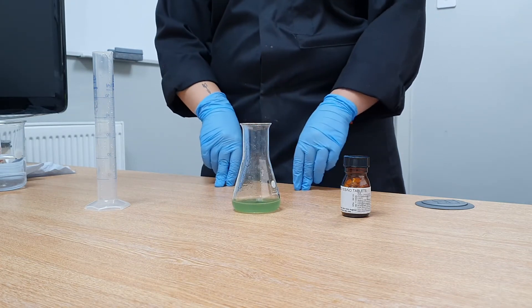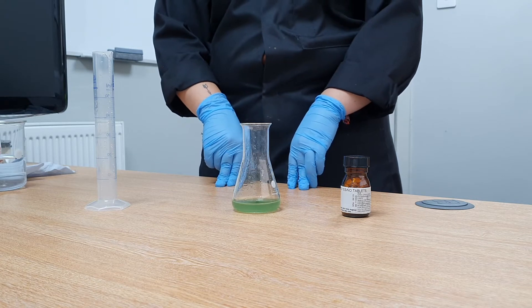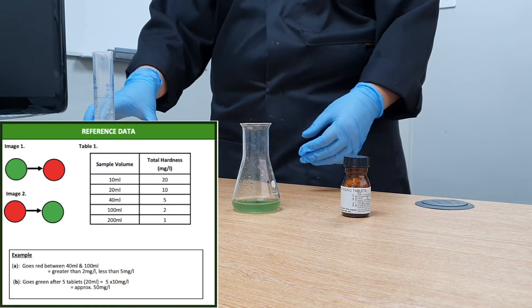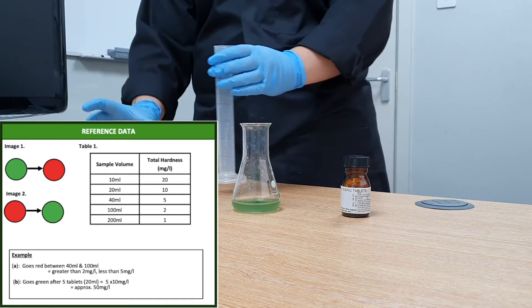If a green colour develops the total hardness is less than 10 mg per litre. Continue to add more 20 ml of sample following the increments shown on the method sheet until the colour changes to red.